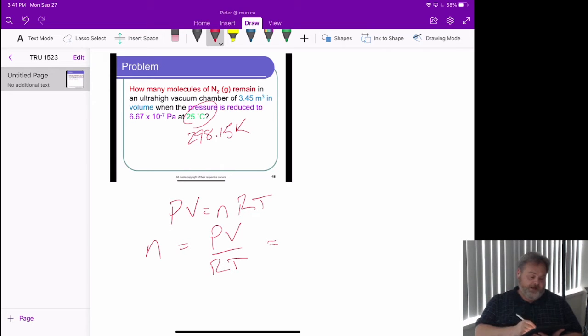So here we have our pressure, 6.67 times 10 to the minus 7 pascals, pretty low pressure. We've got our volume, 3.45 cubic meters. That works out to about 3,450 liters. That's actually almost a room-sized kind of volume, small room, but still.